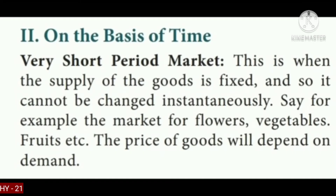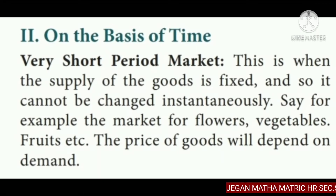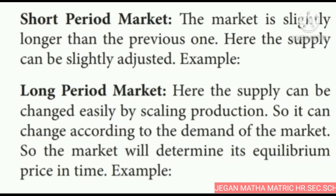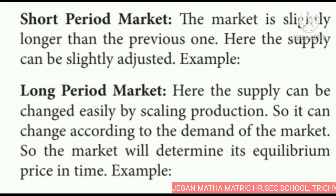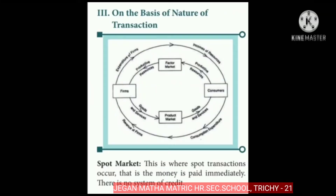On the basis of time, there are very short period markets, short period markets, and long period markets. In the very short period market, the supply of goods is fixed and cannot be changed in intensity. For example, the market for flowers, vegetables, fruits etc. The price of goods will depend on its demand. In the short period market, the time period is slightly longer and the supply can be slightly adjusted. In the long period market, the supply can be changed easily by scaling production, so it can change according to the demand of the market. The market will then determine its equilibrium price in time.